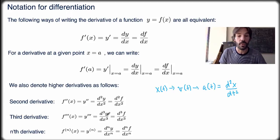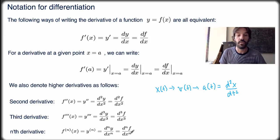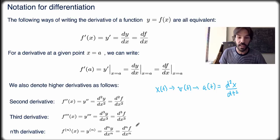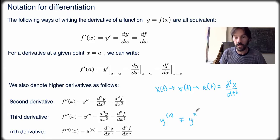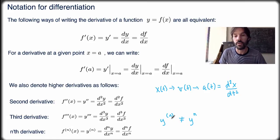You can go to higher order — in fact you can do that for any integer n. The notation y^(n) is used to denote the nth-order derivative. Note that we use brackets in the exponent because y^(n) is not the same as y to the exponent n. y^n means y multiplied n times, whereas y^(n) means the nth-order derivative. So it's really not the same thing.